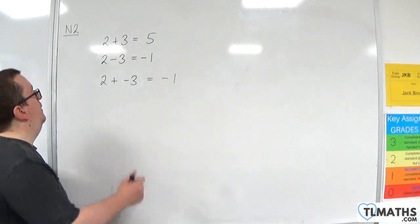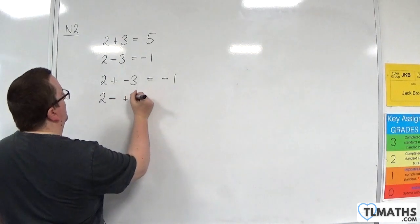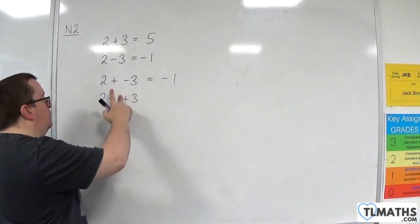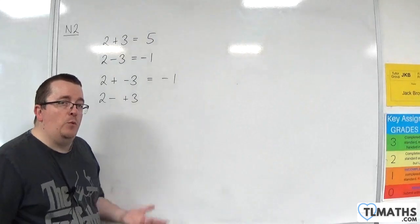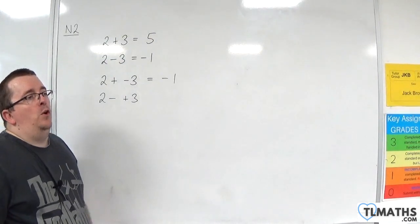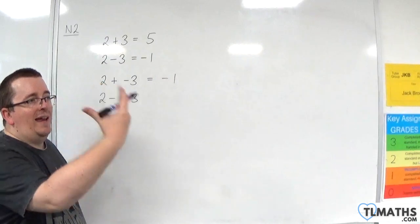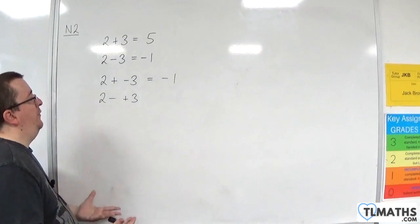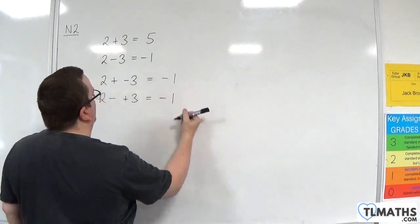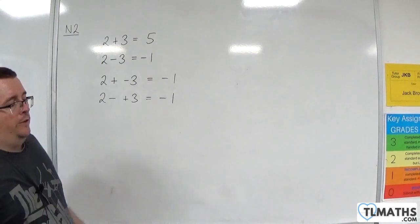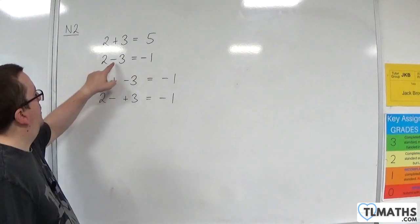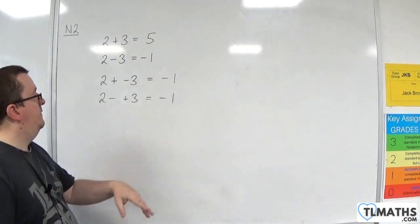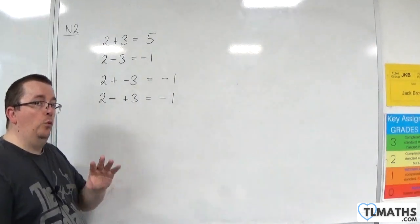What about 2 take away positive 3? Again, I've put it in a bracket — I didn't need to. So 2 take away positive 3: I'm at 2 degrees centigrade and I take away a positive temperature, which conceptually reduces the overall temperature, giving minus 1. So these three expressions — 2 take away 3, 2 plus negative 3, and 2 take away positive 3 — are all the same thing.